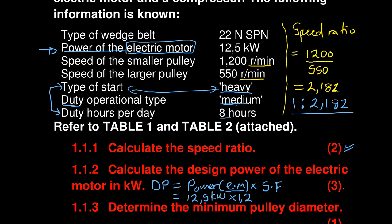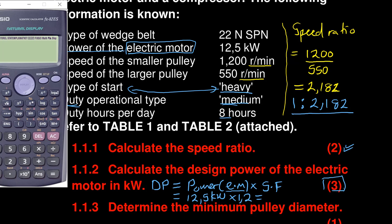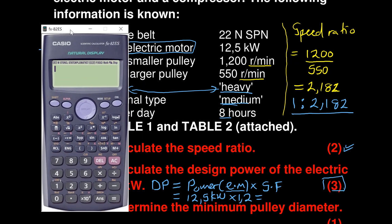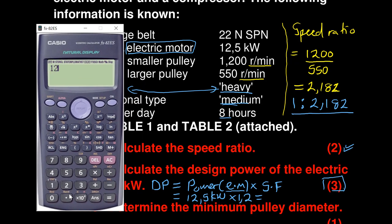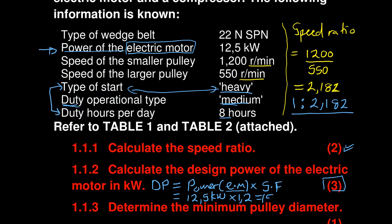So the service factor is 1.2 - finding that value is the reason this part is worth three marks. Now multiplying: 12.5 times 1.2, the answer is 15. Remember, design power must be stated in kilowatt, so the design power is 15 kilowatt.